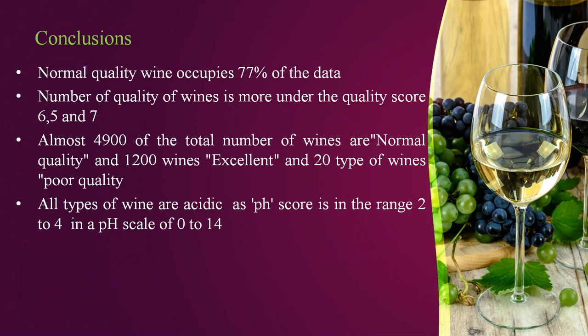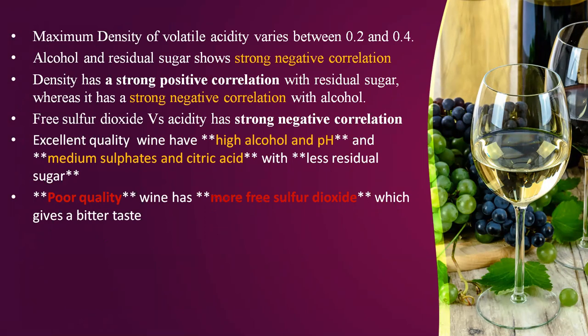Conclusions. From the different types of analysis, we conclude that normal quality wine occupies 77% of the data, with the most wines under quality scores 6, 5, and 7. Almost 4,900 wines are normal quality, 1,200 are excellent, and 20 are poor quality. All types of wines in our dataset are acidic, as the pH score is in the range of 2 to 4 on a scale of 0 to 14. Alcohol and residual sugar show strong negative correlation. Excellent quality wine has high alcohol and pH, medium sulfates and citric acid, and less residual sugar. Poor quality wine has more free sulfur dioxide, which gives a more bitter taste.